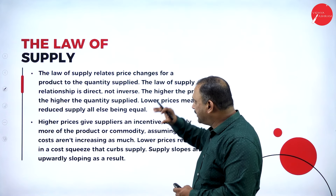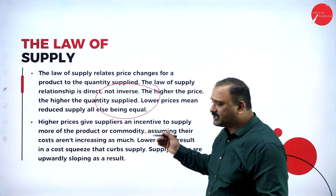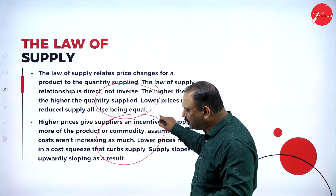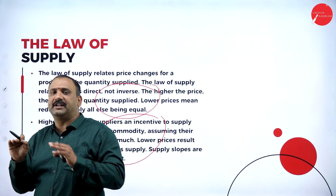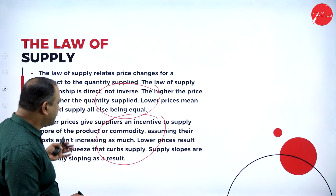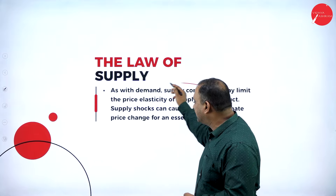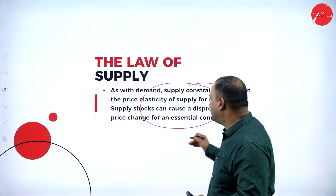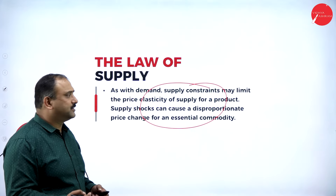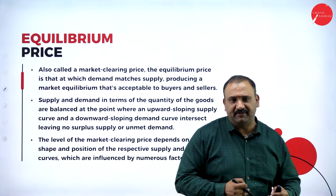The law of supply relates the quantity supplied to price change. Unlike demand, the law of supply is direct and not inverse — higher price, higher quantity; lower price, lower quantity. Higher prices give suppliers an incentive to manufacture and sell more products, gaining an edge in the market. Supply curves are upwardly sloping as a result. However, constraints may arise through price elasticity, and supply shocks can occur due to sudden price changes, technical factors, or inventory disruptions that can hit the supply chain.